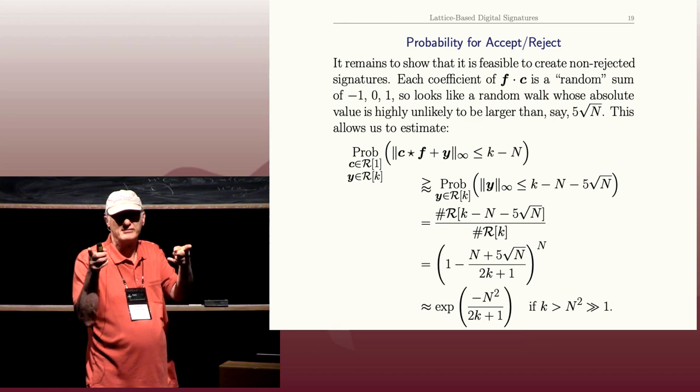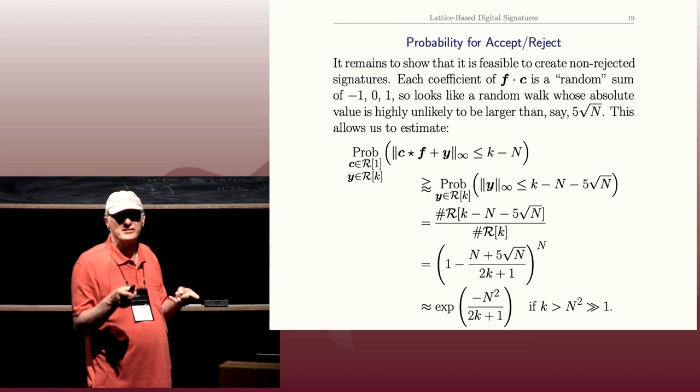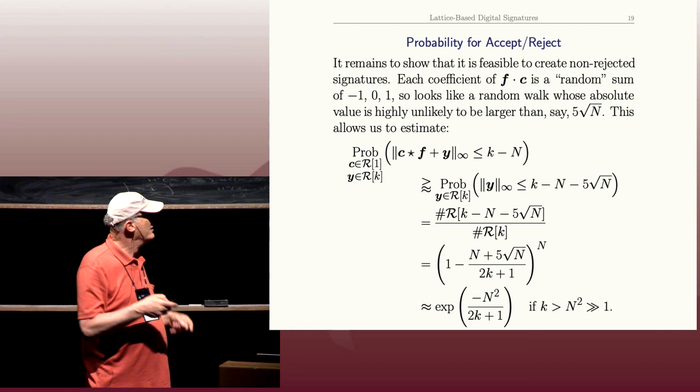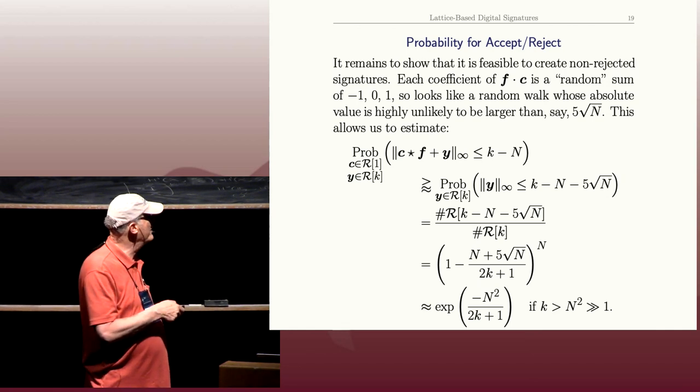N coefficients, 2K plus 1 to the N. So this is 2K plus 1 to the N, and this is similarly this quantity to the N. And I simplified it a little bit.